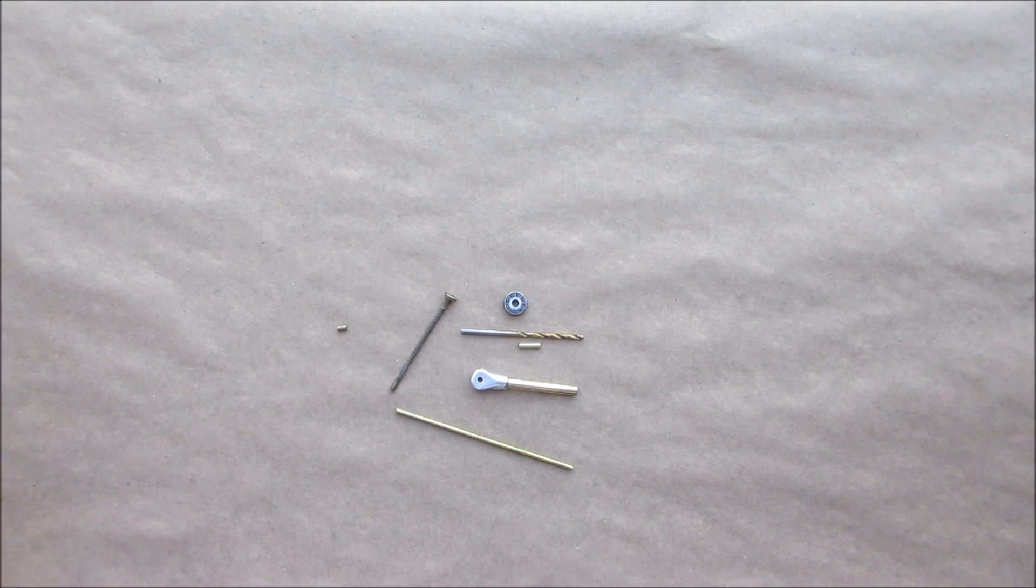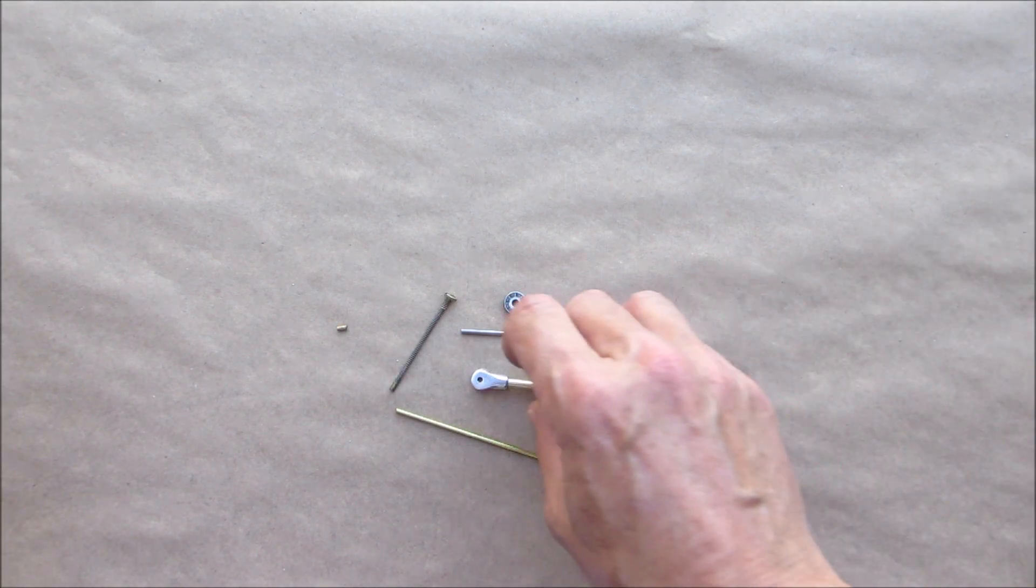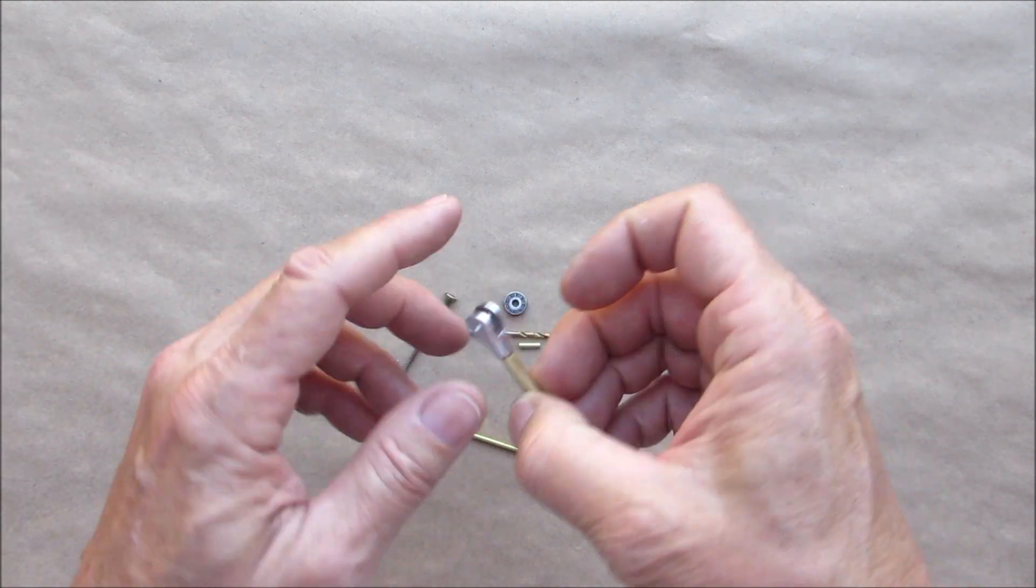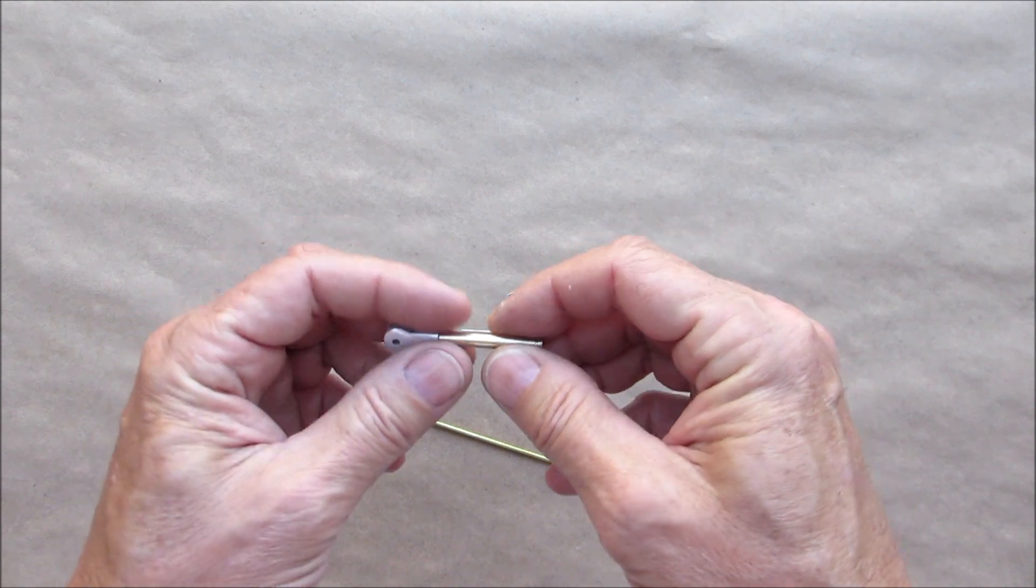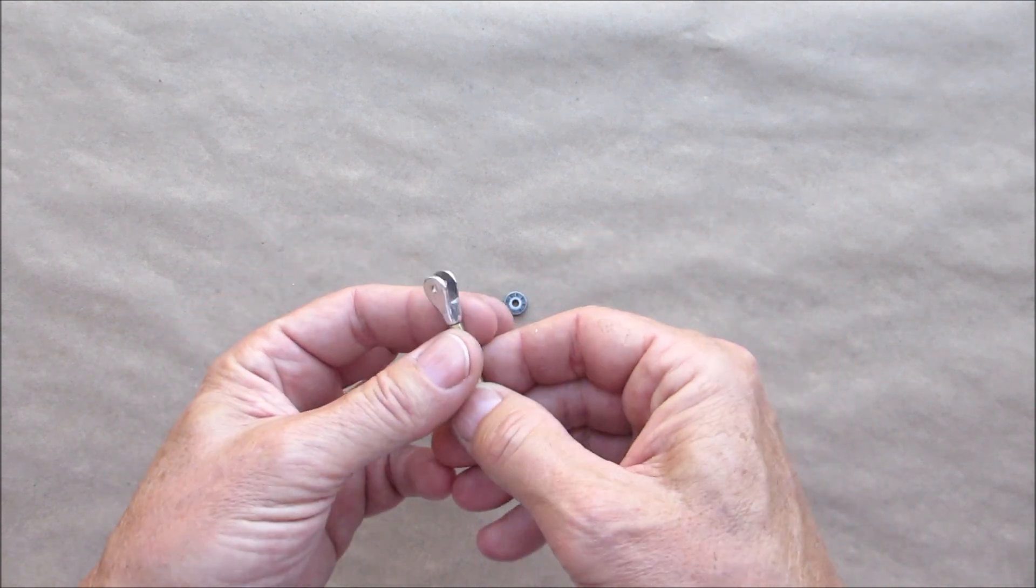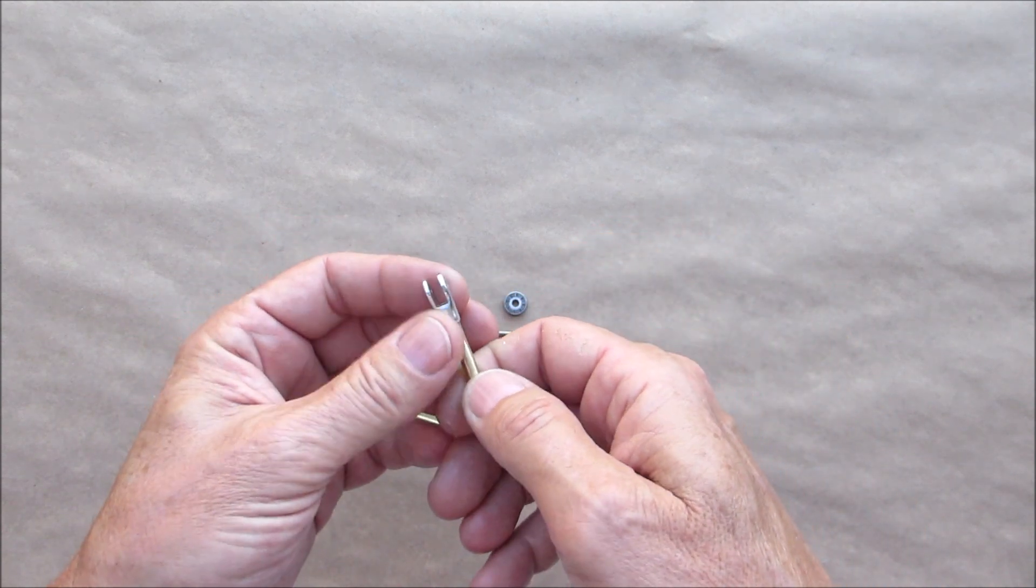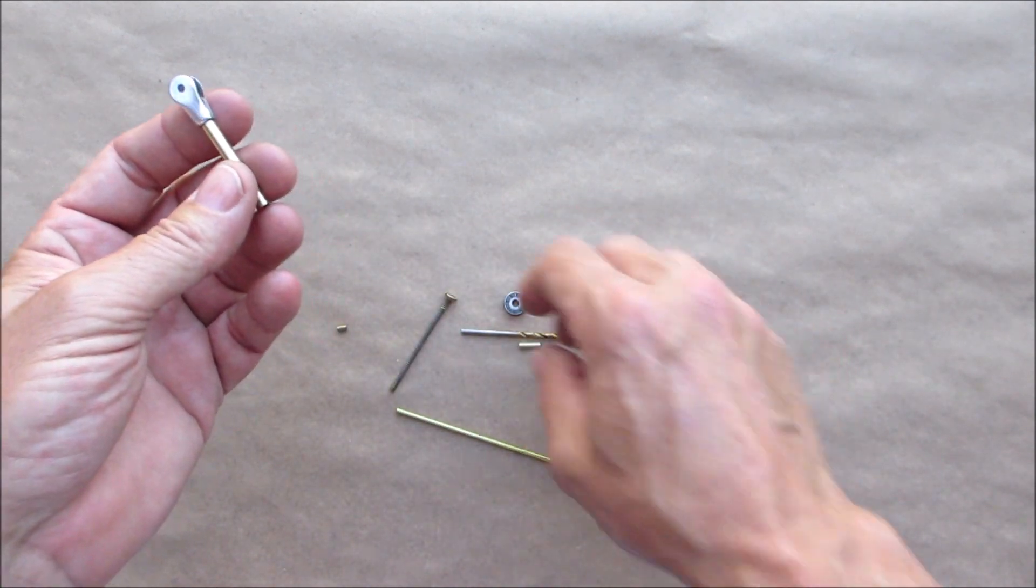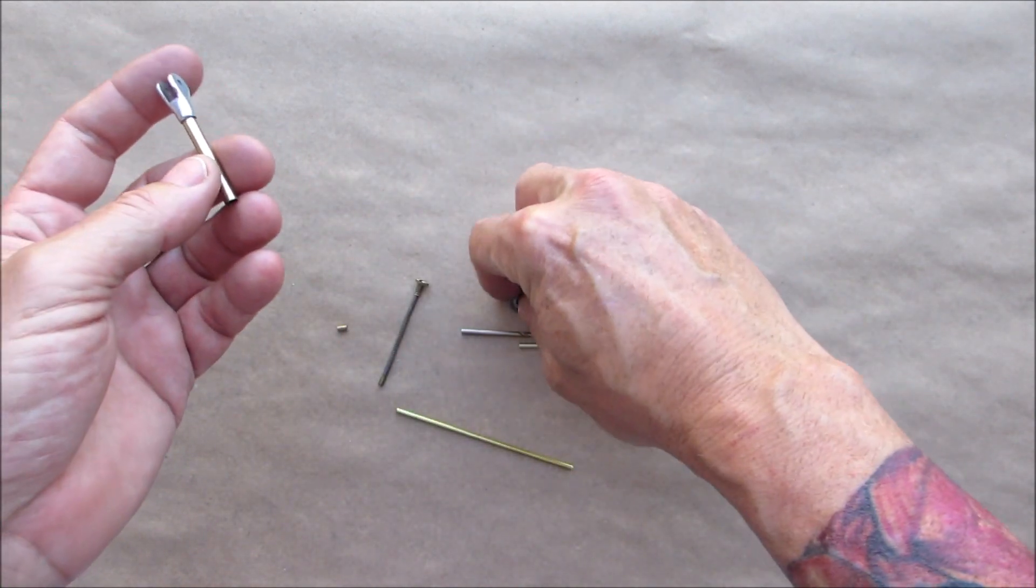Hello everyone, welcome back to part two of the lighter build. Last we left off, I had to do a little finish sanding on this and JB welded the wick in, which I did, and I put a little initial polish on it so you can see how that's coming out. Right now we're going to test it out.